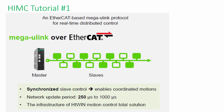HiWen utilizes Mega U-Link protocol. It is EtherCAT based for real-time distributed control. Hence it can synchronize slave control to enable coordinated motions. The network update period is 250 microseconds to 1 millisecond.